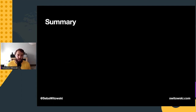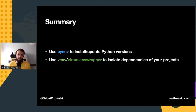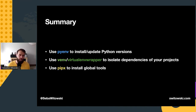That brings me to the end of my presentation. To summarize: first, use pyenv to install new Python versions — once set up, it's really easy to install and switch between versions. Then, use virtual environments when working on different projects to isolate dependencies — always create a separate virtual environment for each project. Python's built-in venv module works great, but if you prefer additional functionality, virtualenvwrapper is an excellent choice. Finally, if you want to install tools globally, you can use pip outside a virtual environment, but there's a risk of version conflicts. A much better option is pipx — it installs each package in a separate virtual environment, but you won't notice any difference in how you use them.